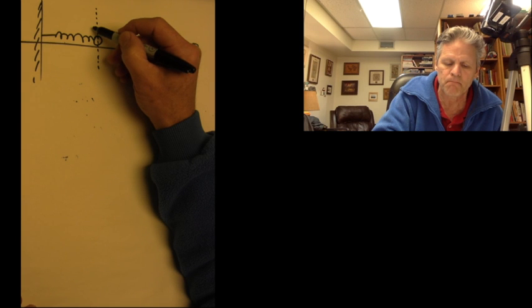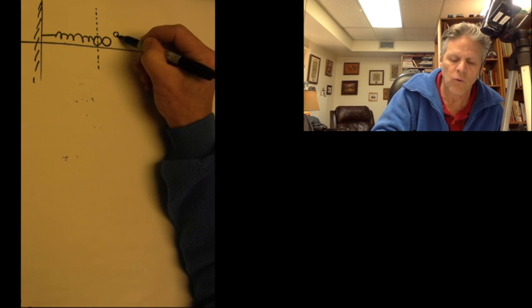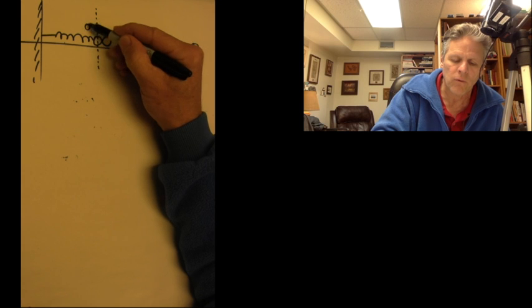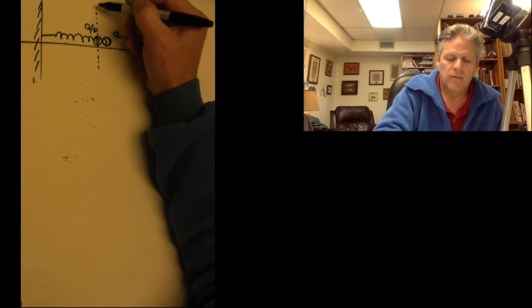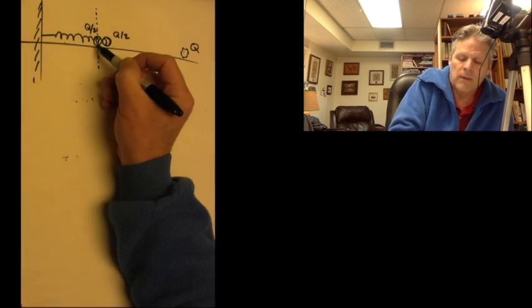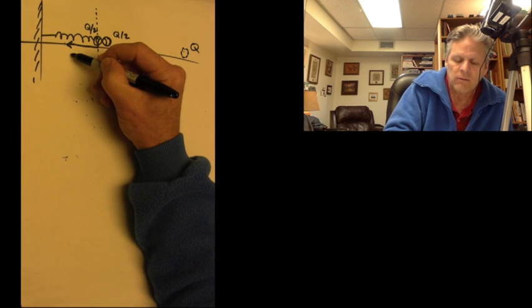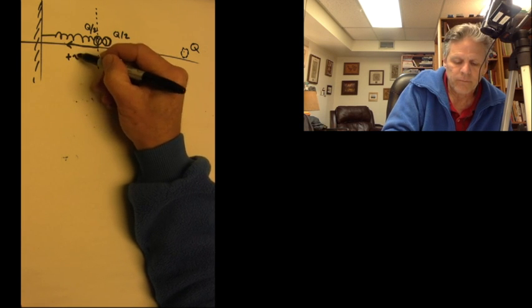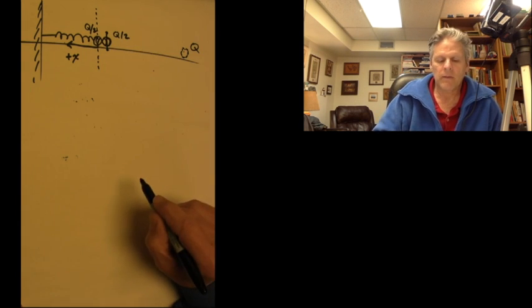Then what are we going to end up with? We're going to end up with Q over 2 and Q over 2. Now we've got those charges on each of these. I'm going to go ahead and choose this direction to be my positive X direction. And remember that this is pinned in place. This cannot move, and that's given in the problem.